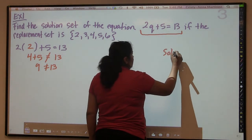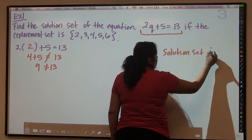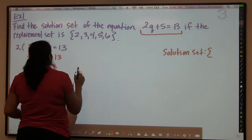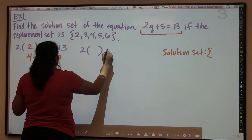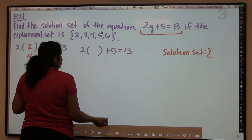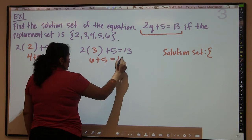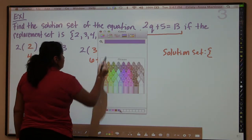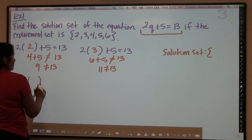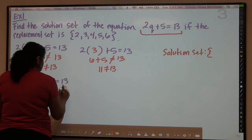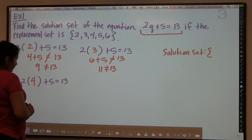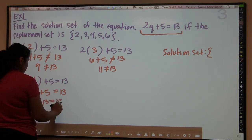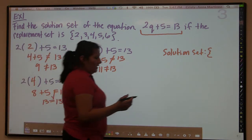We're going to write our solution set with little brackets and put inside it only the ones that actually make the statement true. Trying 3: 2 times 3 is 6, and 6 plus 5 is 11, which is not 13 — so 3 is not in our solution set. Trying 4: 2 times 4 is 8, and 8 plus 5 is, in fact, 13. Since that's a true statement, the number 4 is part of our solution set.